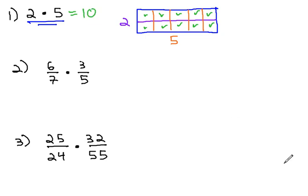We can follow a similar pattern with fractions, thinking about shading 6 sevenths of one side and 3 fifths of the other side of the rectangle to see what fraction is shaded of the final box.